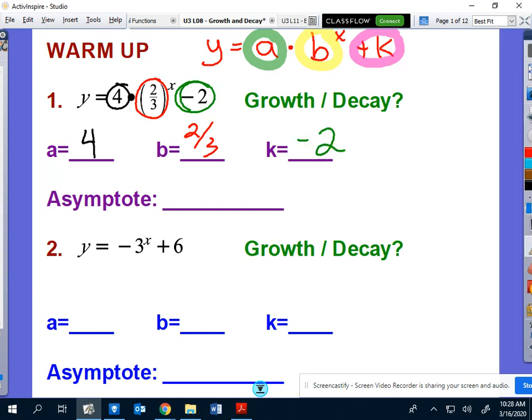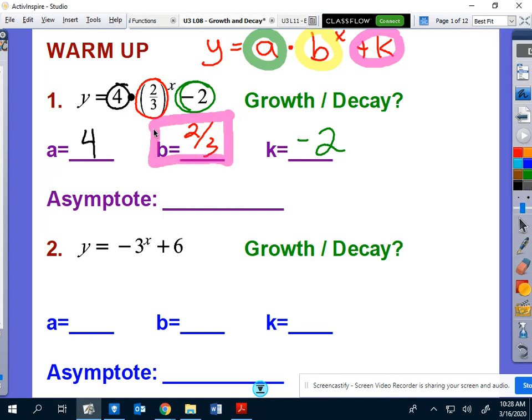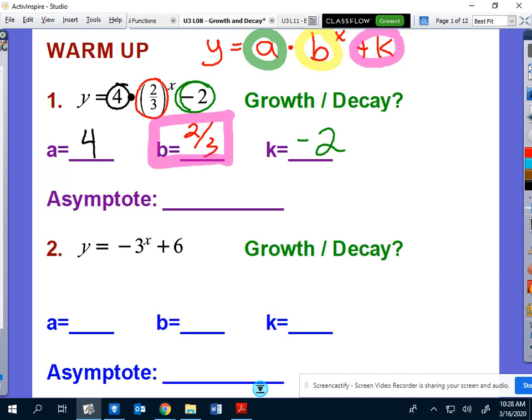So once we've done that, it enables us to determine whether this is growing or whether it is decaying. And that all depends on your MVP. That all depends on the b value here. The b value determines whether you're growing or decaying.